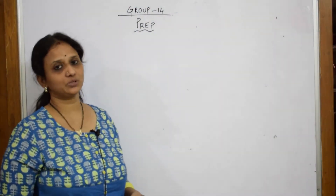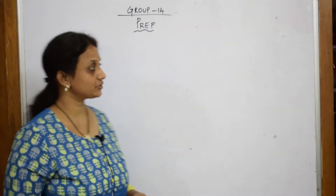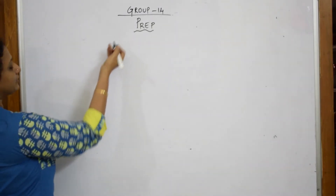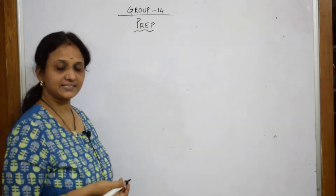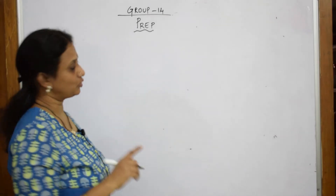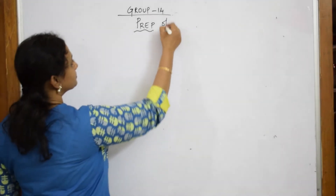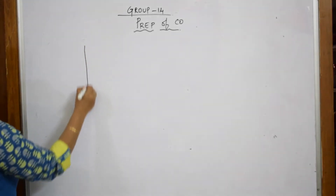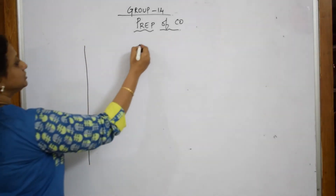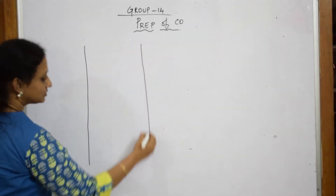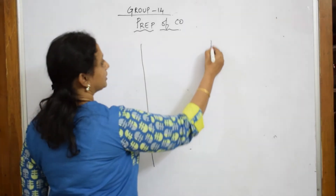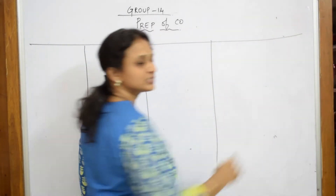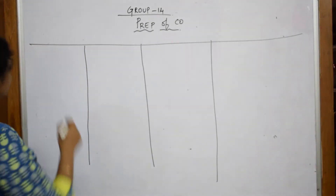Let us come back and do one more preparation. We are going to prepare commercially, as I said, carbon monoxide. Let us write a heading: preparation of carbon monoxide. When you are preparing carbon monoxide, remember these four important things. This is a very common question asked to prepare carbon monoxide.